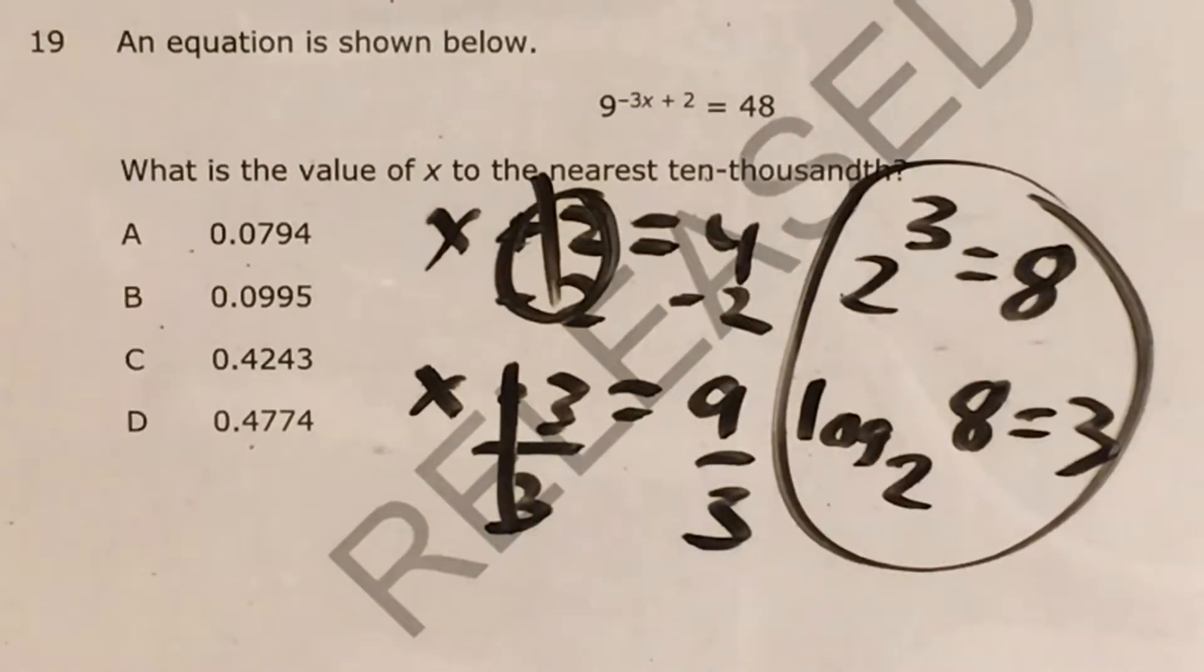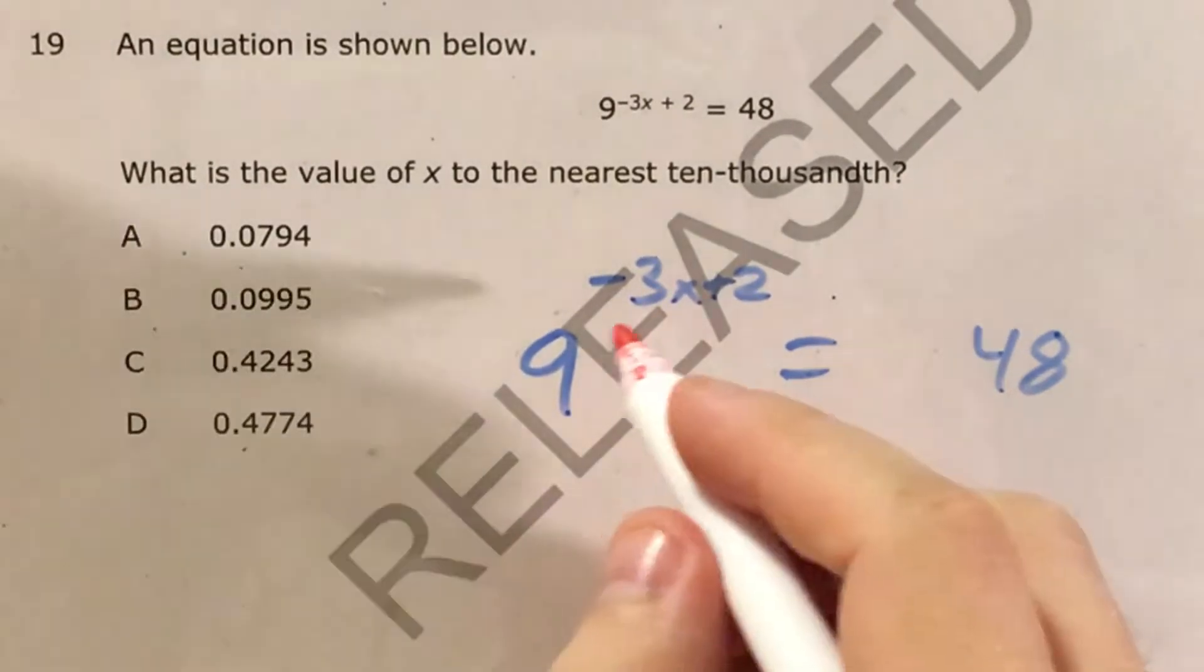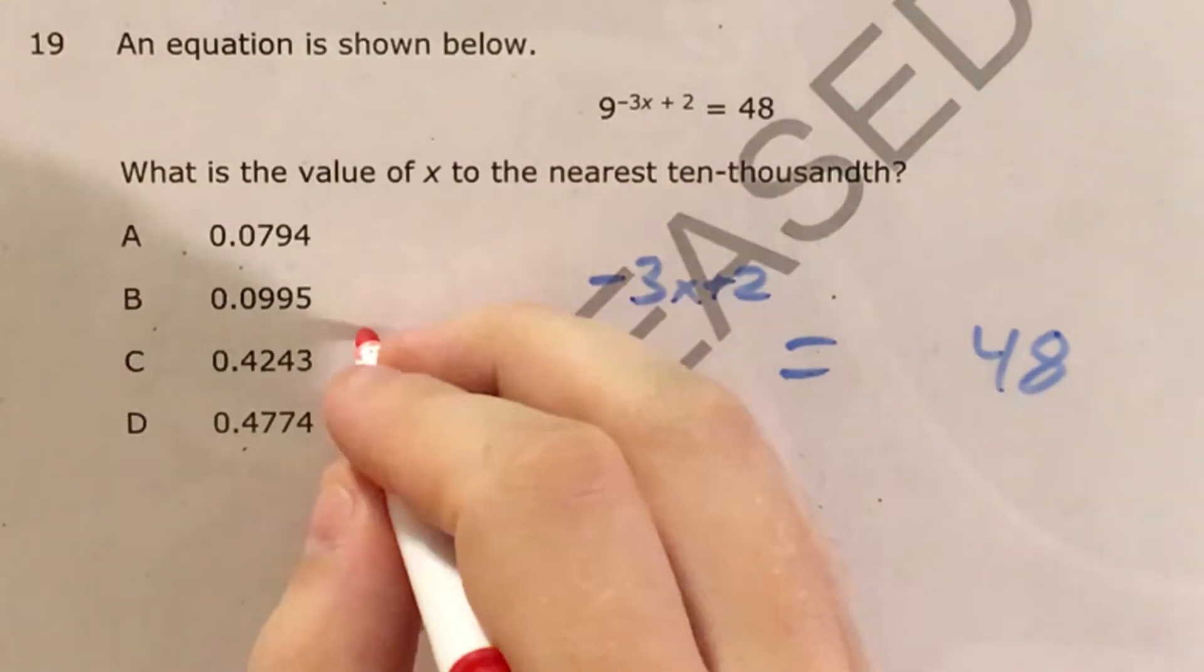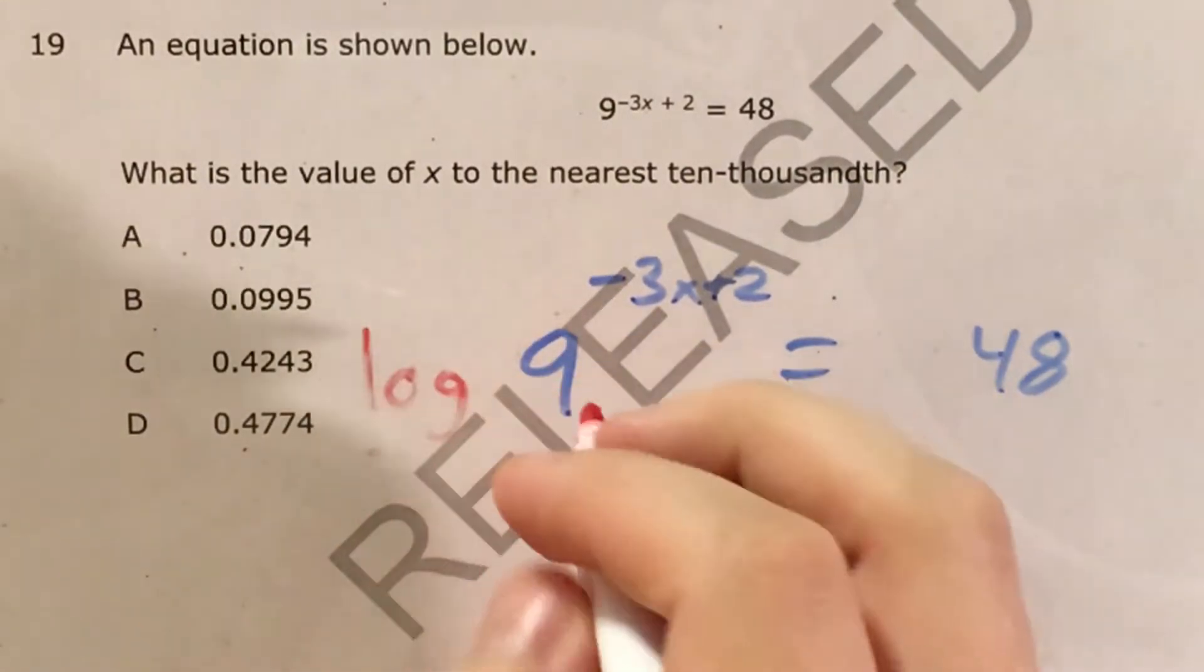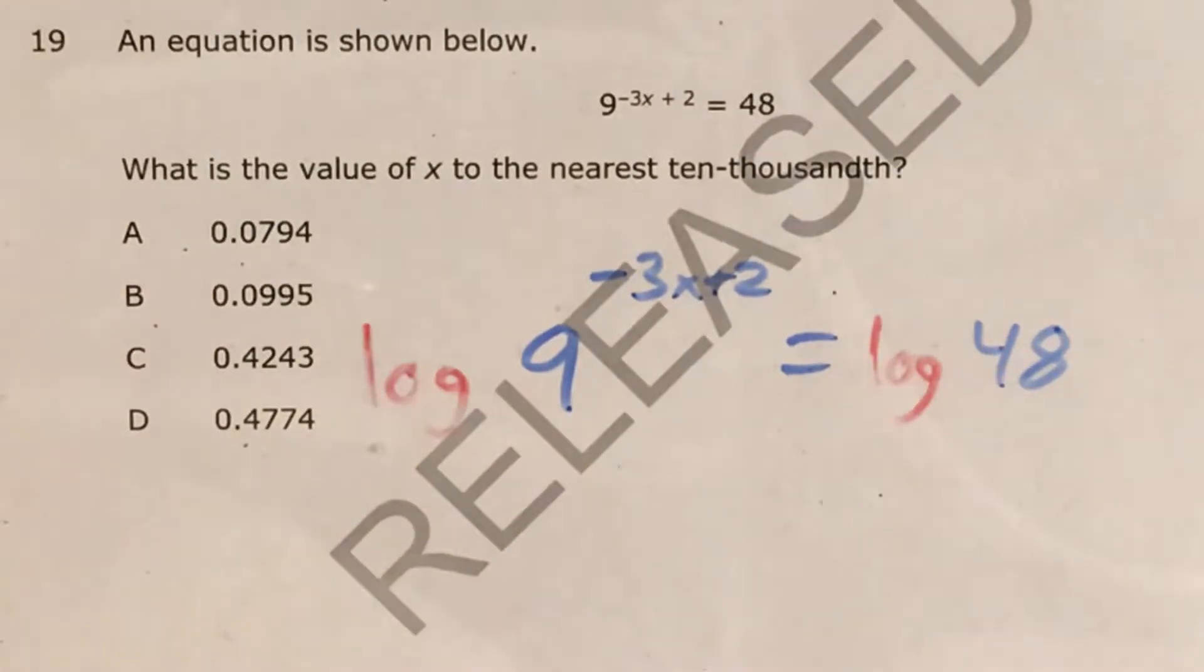So I'm gonna erase everything and then we'll go from there. Okay, here's my equation. If I have a variable inside an exponent then I want to do the same thing to both sides. I want to take the log of both sides.